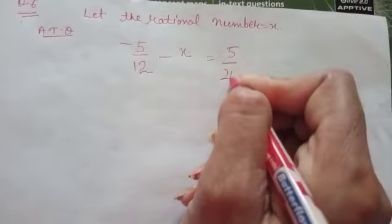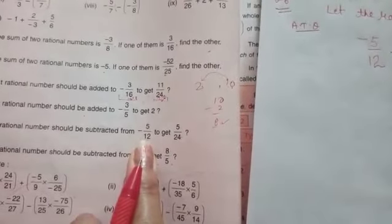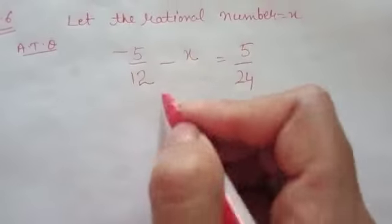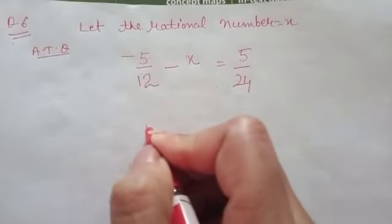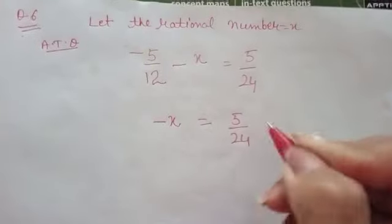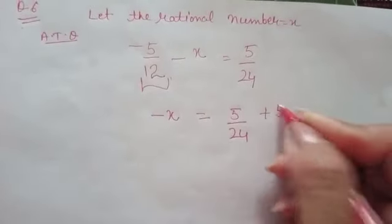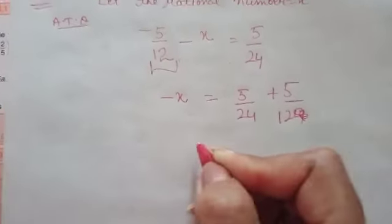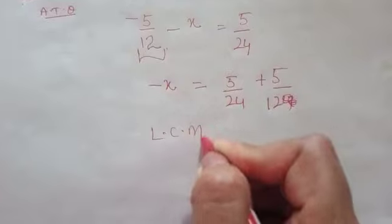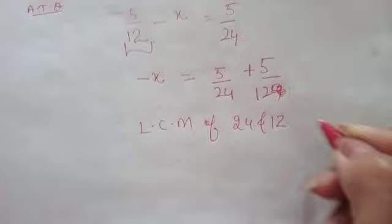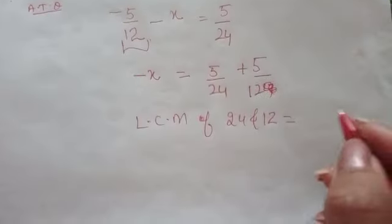5 over 24. Now we have to find the value of x. Write minus x as it is, take this number to the other side — it will be plus 5 over 12. Take the LCM of 24 and 12, you will get 24.